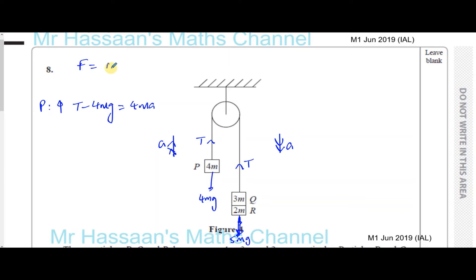And for particle Q, I'm going to take down as positive, seeing as this is going to be moving downwards. So in that case, I've got 5Mg minus T is equal to 5Ma, because the total mass is 5M. So I have two equations, equation 1 and equation 2. If I take these two equations and I add them together, T will be eliminated. So equation 1 plus equation 2 will give us basically 5Mg minus 4Mg, which is 1Mg, is equal to 4Ma plus 5Ma, which is 9Ma. So we can see that A is equal to G over 9.